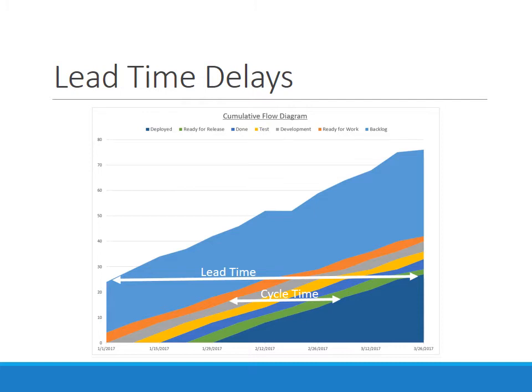This particular graph shows the team is working really well once they get started on work and getting it to production — their cycle time is really good and smooth. The lead time is where the delays are. The backlog is really big, the light blue part, and it continues to grow and get fatter as the graph moves to the right. Work is coming in a lot faster than the team is able to produce. This could be an issue of the team needing to be bigger to keep up with the flow. Lead time being this large means that when somebody has an idea, it may or may not make it to production at all, or if it does, it might take a long time to get there based on priorities.